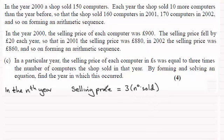Now for the selling price we're told that starting from the year 2000, the first value was 900 and it dropped by 20 pounds each year, so this formed an arithmetic sequence. When we're looking for the nth term of an arithmetic sequence, remember the nth term is always equal to the first term a plus n minus 1 times the common difference d, n being the number of terms.